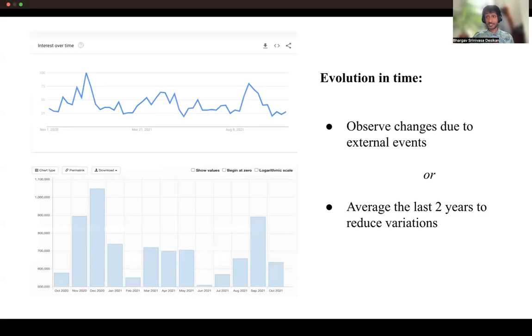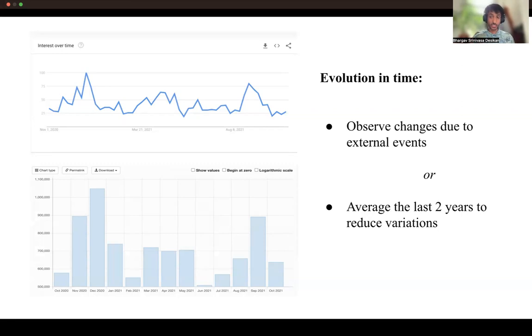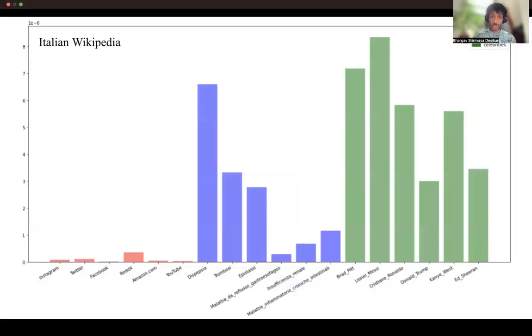And for example, this allows us to do things, as you can see over here, where we can see over time, how has the Google to Wikipedia click-through changed for a particular topic? So we can see if there's external events, just like knowledge boxes, or we can also average this out just to get one value and use it to compare between other topics, other titles.